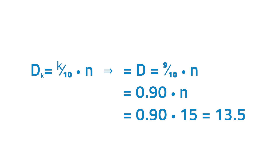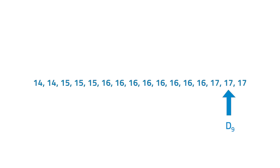There are 90% of the data set below 17 and 10% are above it. From the arranged ages of the grade 10 students: 14, 14, 15, 15, 15, 15, 16, 16, 16, 16, 16, 16, 16, 16, 16, 17, 17, 17.